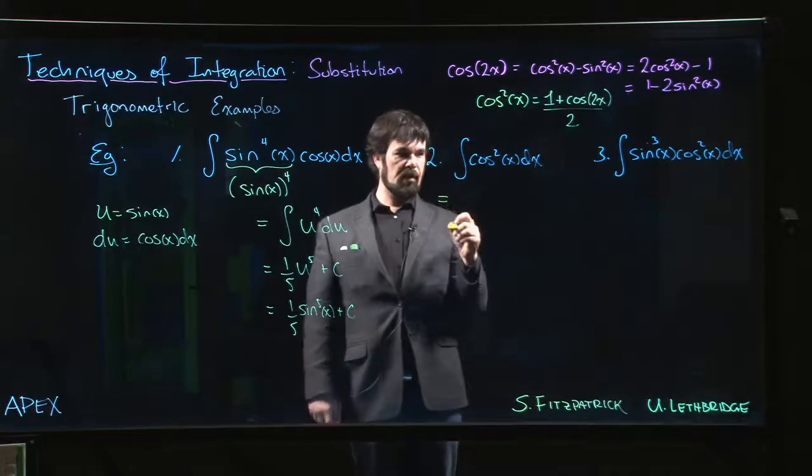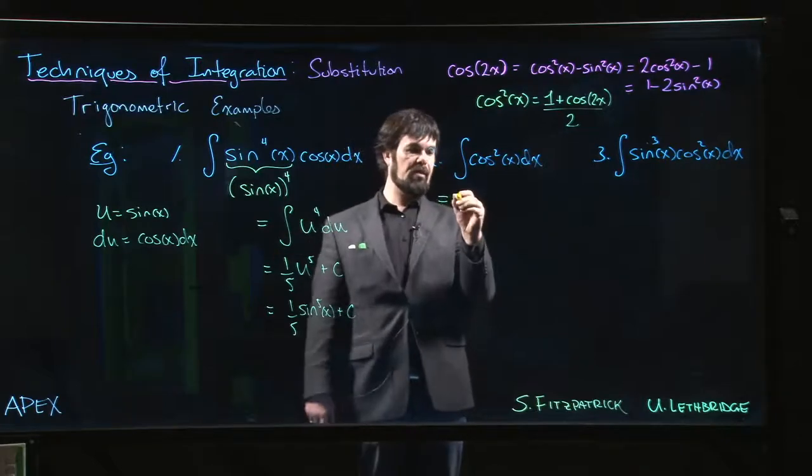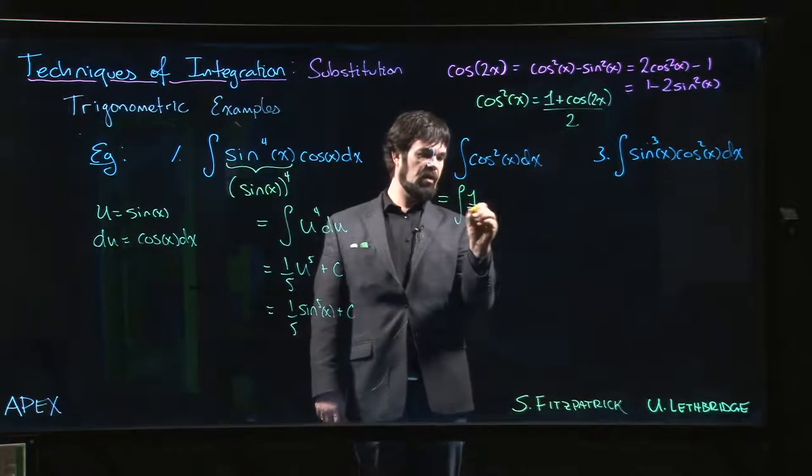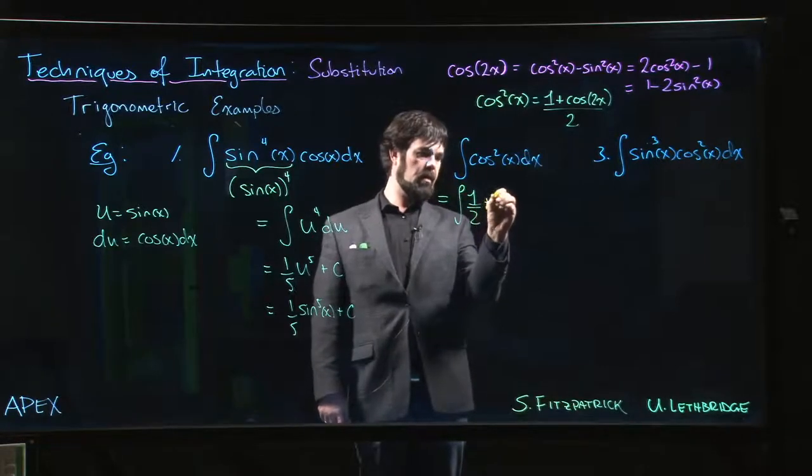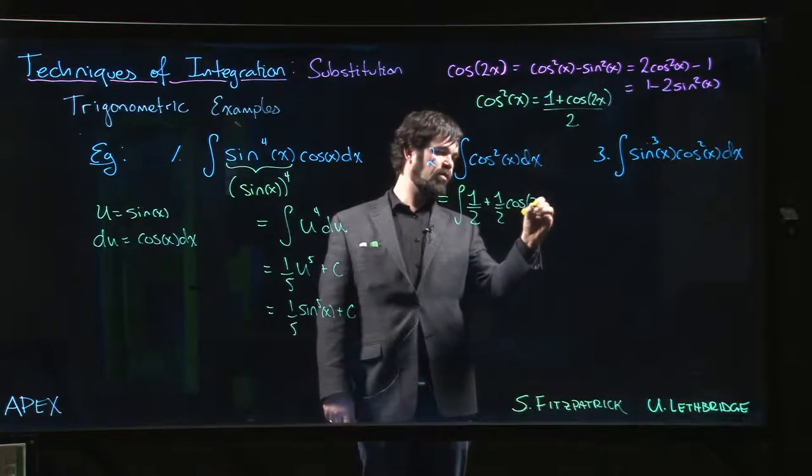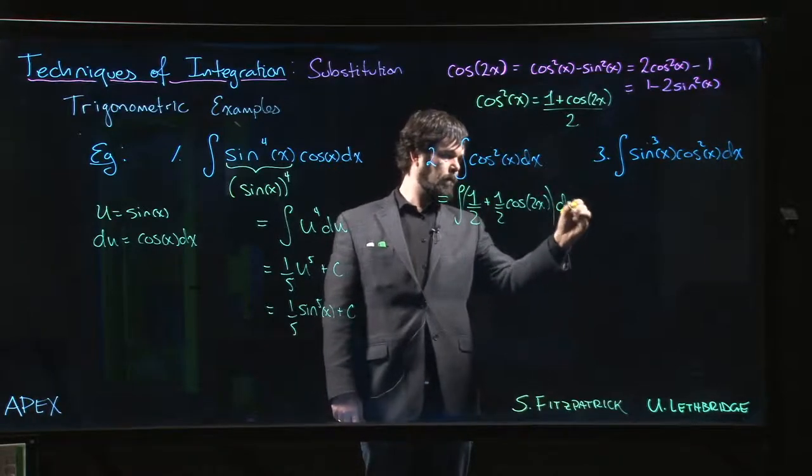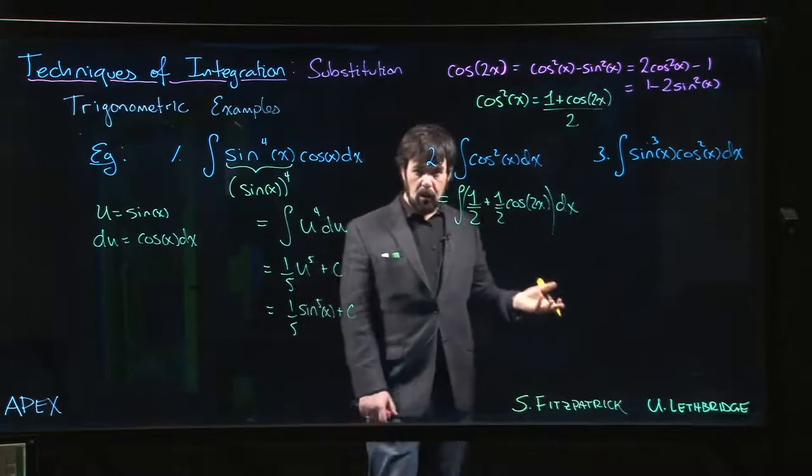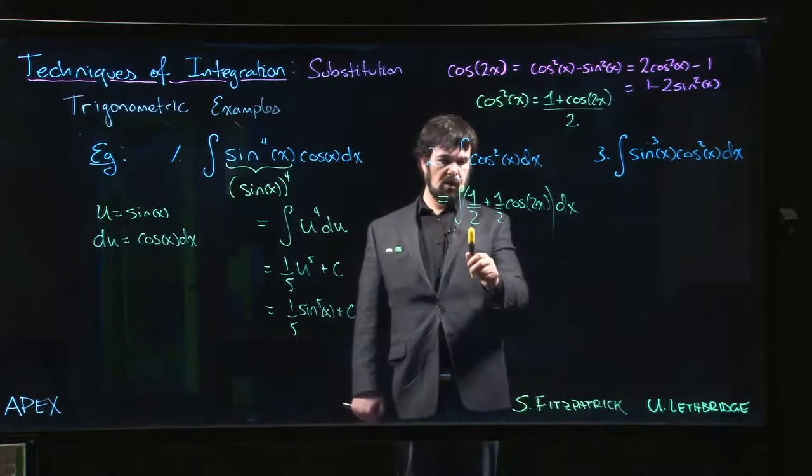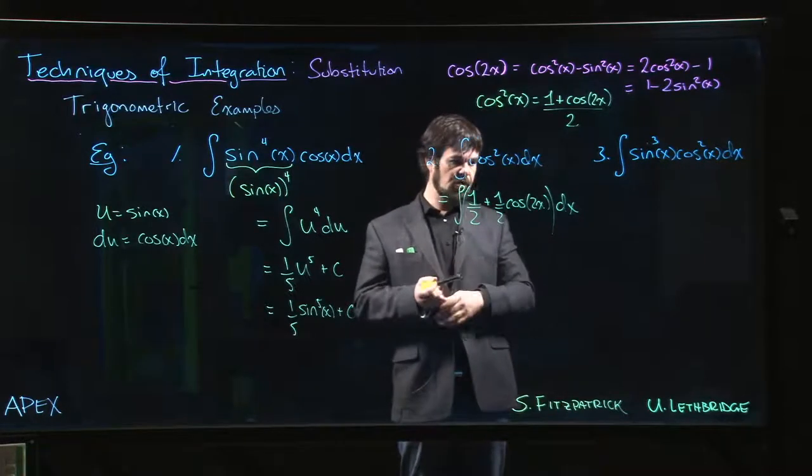So all we do is we actually substitute. So this time it's not a substitution in this sense, it's just applying a trig identity. So cos squared becomes - we can even write it like this - 1 half plus 1 half cosine of 2x dx. And now we integrate term by term. This is just a constant, so when we take the antiderivative we just get a constant times x. Cosine 2x - okay, technically there is maybe a u substitution here.